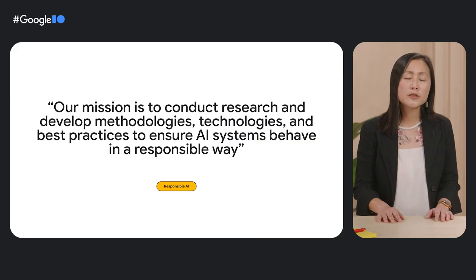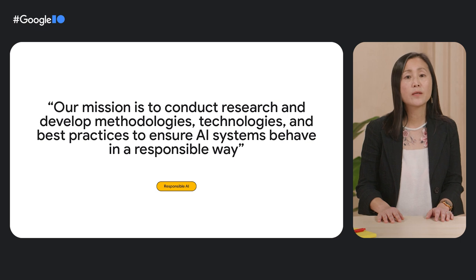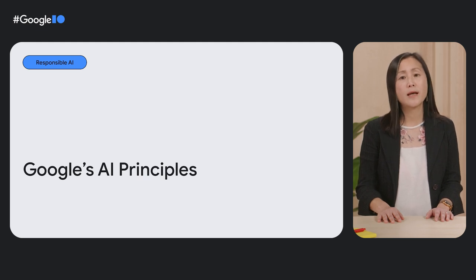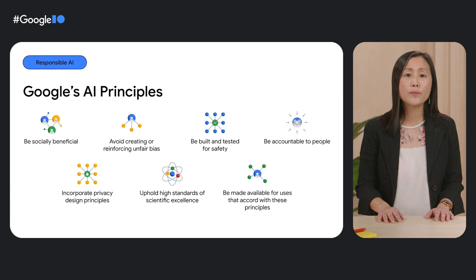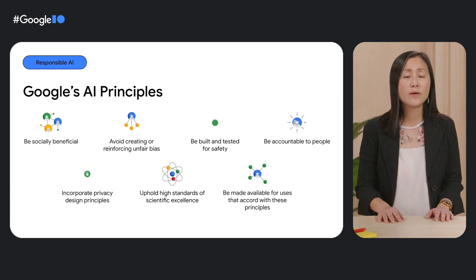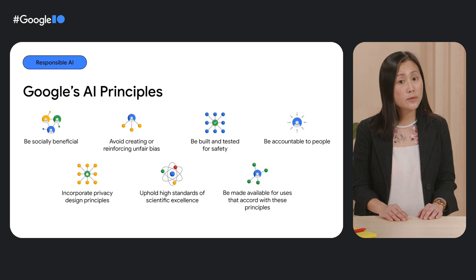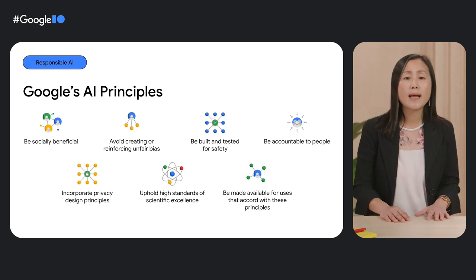With a goal of making the technologies that we build safe and fair, our mission here on Google's Responsible AI team is to conduct research and develop methodologies, technologies, and best practices to ensure AI systems behave in a responsible way. That's also why we developed AI principles to guide our product development. We want to use AI to solve important problems and continue to be thoughtful and intentional when developing new technologies. We would like to share these AI principles with you — you can learn more at the link below. There are seven principles, and we'll be leaning into several of them here, including avoiding unfair bias and being built and tested for safety. One that is relevant but we won't go into detail today is being accountable to people.